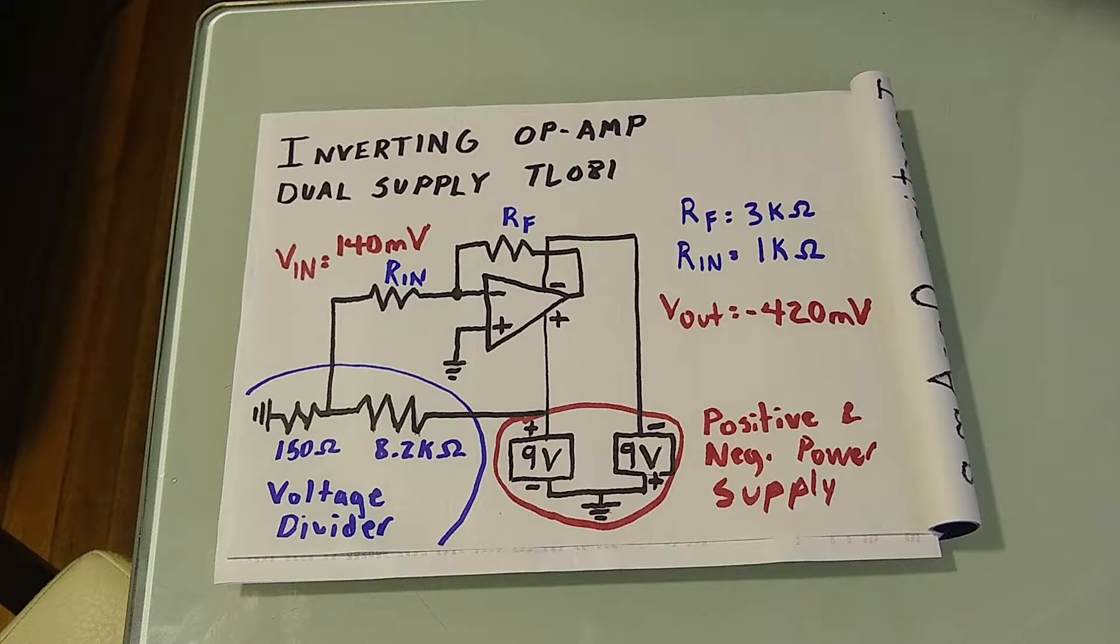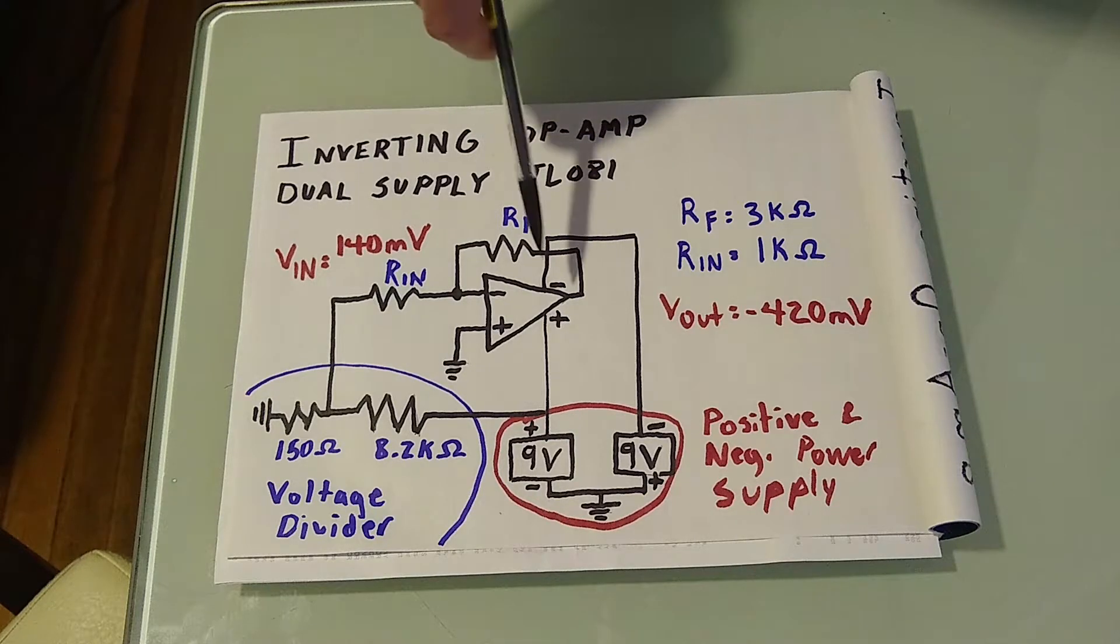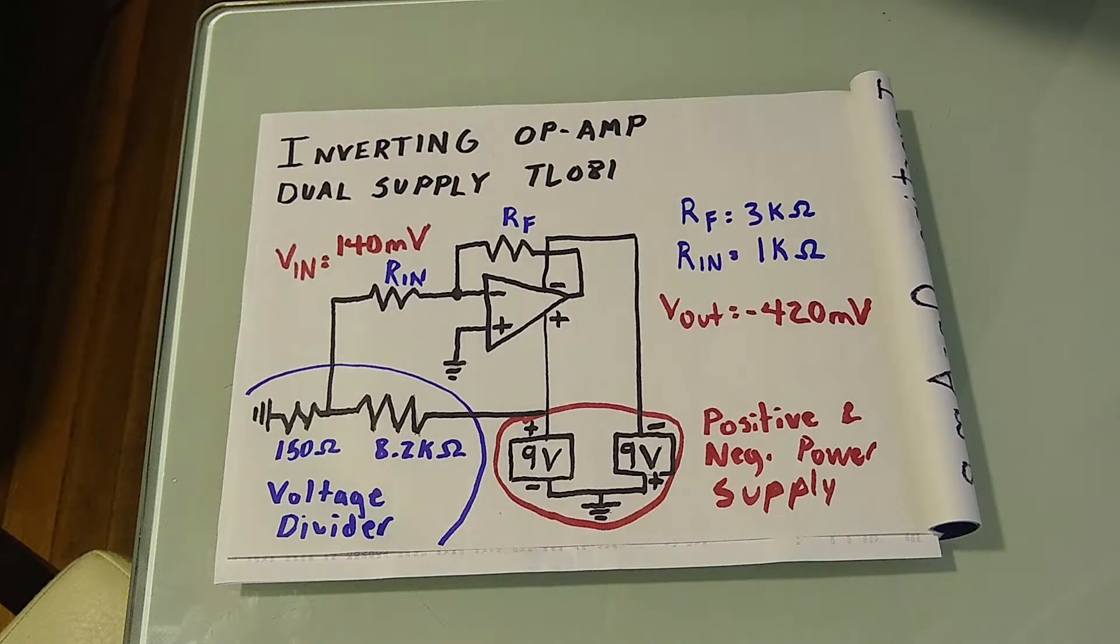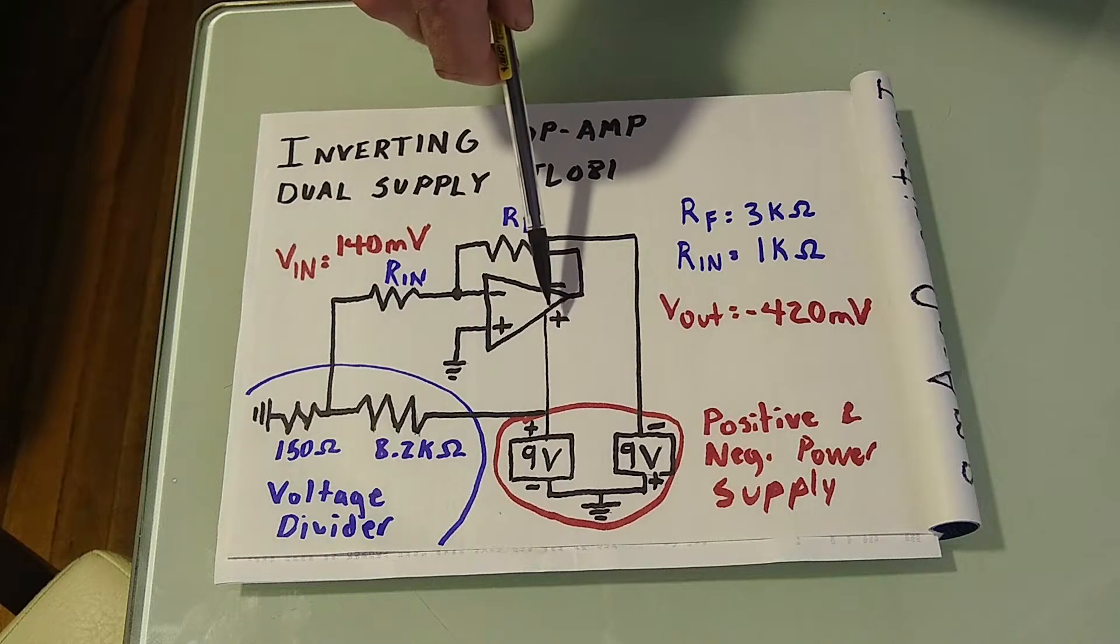Here we have a circuit diagram using the TL081 op-amp from Texas Instruments. To supply power to the op-amp, we are using two 9-volt batteries. This op-amp requires a negative voltage coming into the negative power supply input, and a positive voltage coming into the positive power supply input.